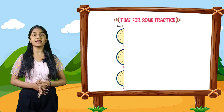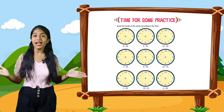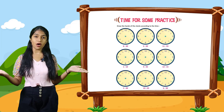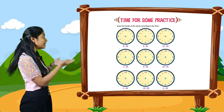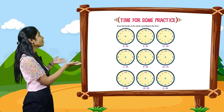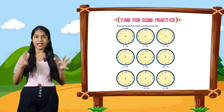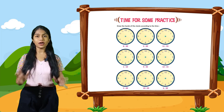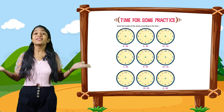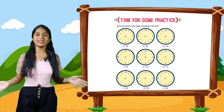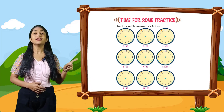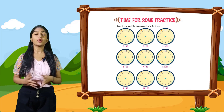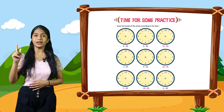2 o'clock afternoon your school is over. 5 o'clock evening is your play time. So now it's time for some practice: draw the hands of the clocks according to the time. Here are some clocks given to you and you have to draw the hands of the clock.